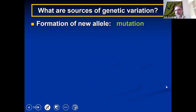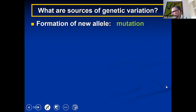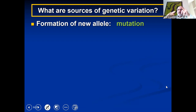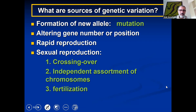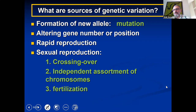Formation of new alleles by mutation — changes in the DNA sequence — is something we see in bacteria all the time, as I described with the tuberculosis adaptation example. When changes occur, the genome of some bacteria changes, they adapt, and can modify to resist the antibiotic. This includes altering gene number or positions, rapid reproduction, sexual reproduction, crossing over, and independent assortment — all contributing to survival of the fittest, meaning the species that can adapt to the environment.